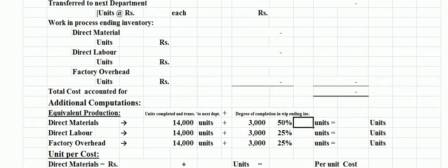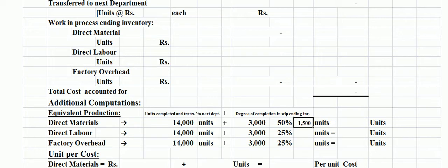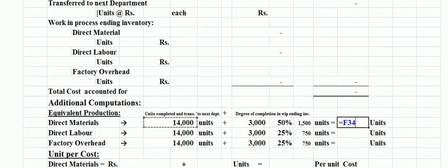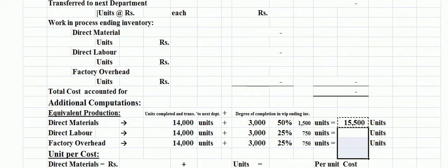We find the number of equivalent units in combination form. For materials, the equivalent production is 1,500 units in process (3,000 × 50%). For labor and factory overhead, the equivalent units in process are 750 units (3,000 × 25%). We copy these equivalent production values for use in the per unit cost calculation.